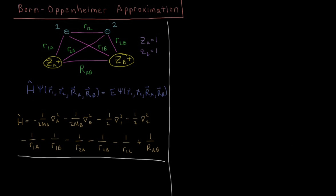Now that we've seen the Hamiltonian for the hydrogen molecule, our next order of business is to look at an approximation which is going to help us solve for the wave functions and energies of molecules. We had our total Hamiltonian with two nuclear kinetic energy terms — kinetic energy of nucleus A and nucleus B — and kinetic energy of electron 1 and electron 2, along with all six pairwise interactions due to Coulomb's law for these four charged particles.